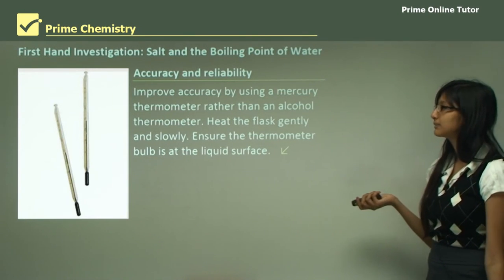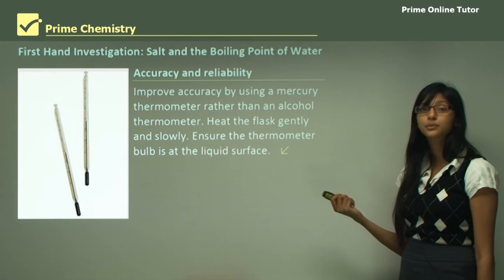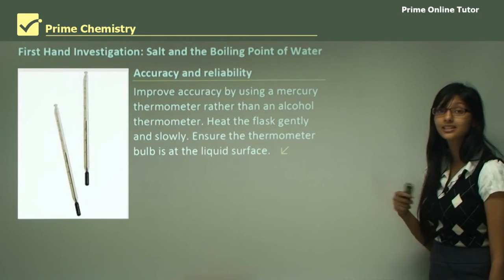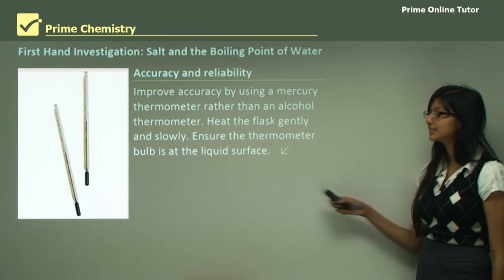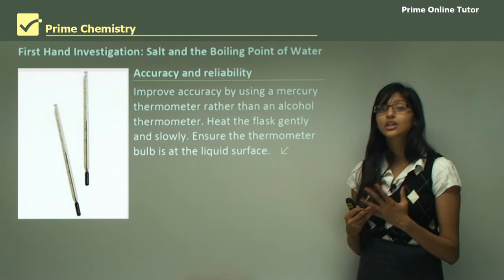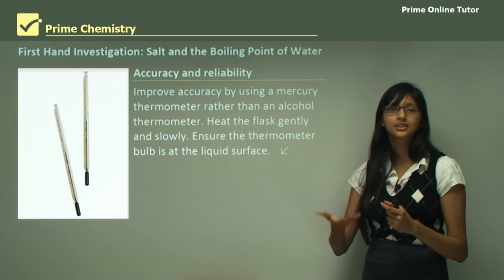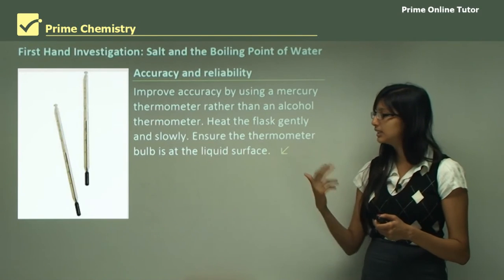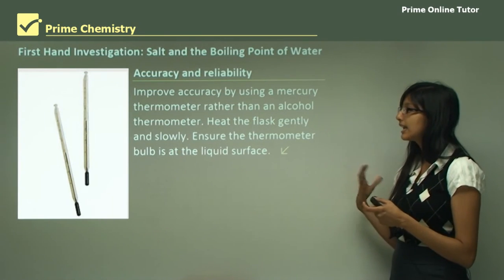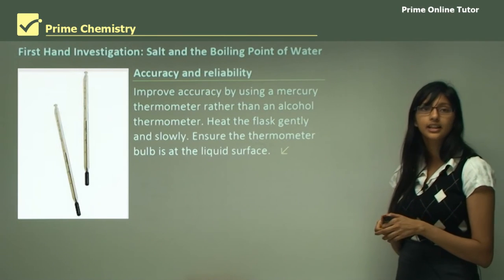Always make sure the flask is heated gently and slowly so you do not damage the glass apparatus. Also ensure the thermometer bulb is at the surface of the liquid and not at the top. Liquids follow convection — hot liquid rises to the top and cold liquid falls to the bottom, so the liquid in the beaker is always circulating. Placing the thermometer bulb at the surface of the liquid avoids disruptions from convection and gives an accurate measure of the boiling point.